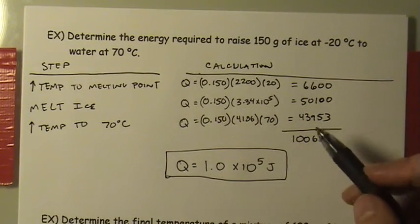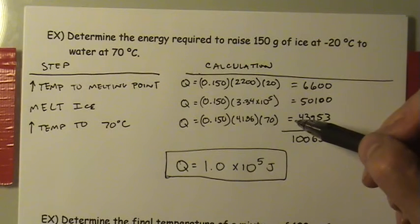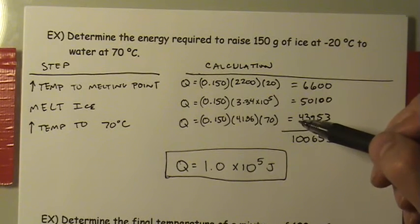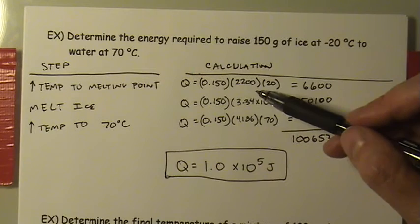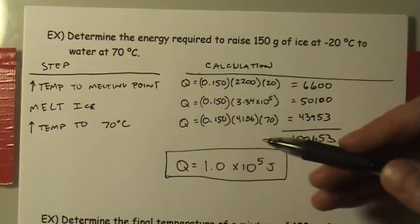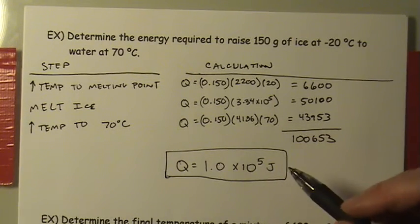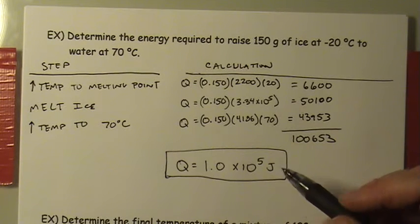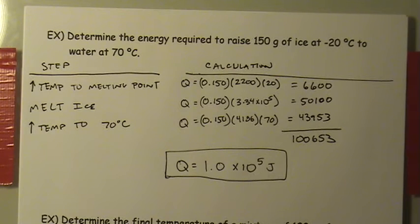It's a somewhat tedious calculation in that it requires step-by-step work, but not a complicated one. You're either using specific heat capacity or the latent heat of fusion depending on the state of the substance, and you just follow the steps as you move through the phases and temperature changes for each specific substance.